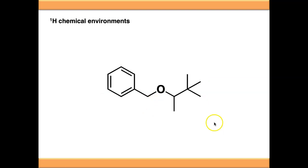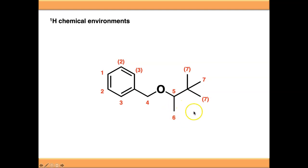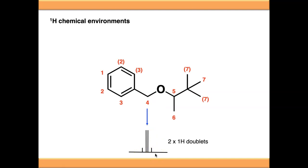If we change the molecule slightly and add a methyl group onto what was position 5, we renumber the compound. We've added a new chemical environment with the CH3 group. But looking at the signal for the protons on position 4 now, we no longer get a 2H singlet — we get a multiplet which looks a bit like a quartet, but is actually two 1H doublets, and if we colour-coordinate them you can see they are two separate signals.